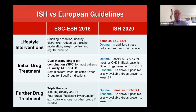Lifestyle intervention differs very little in any guideline across the world. All guidelines emphasize its importance to complement treatment, try to delay treatment in people with borderline hypertension, and reduce risk, and all guidelines recommend similar interventions. In the ISH guideline there are one or two additional interventions for optimal care: avoiding stress and indeed avoiding air pollution, the latter potentially being very important in certain settings.